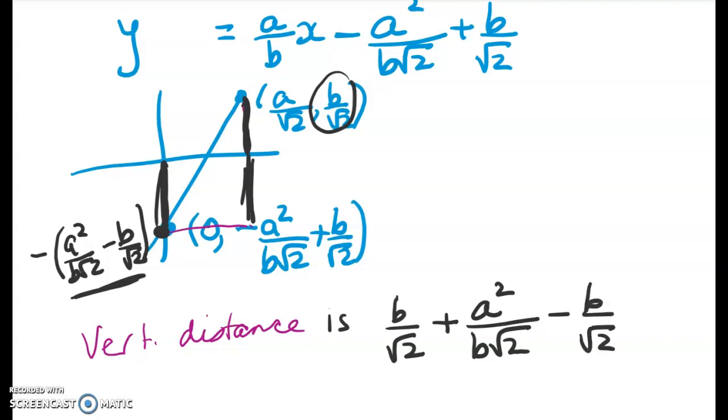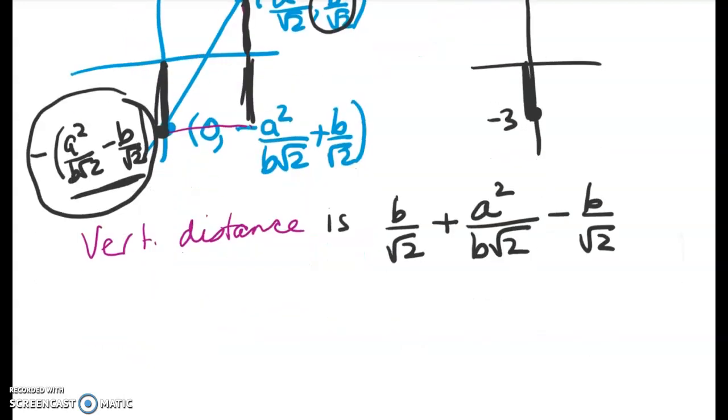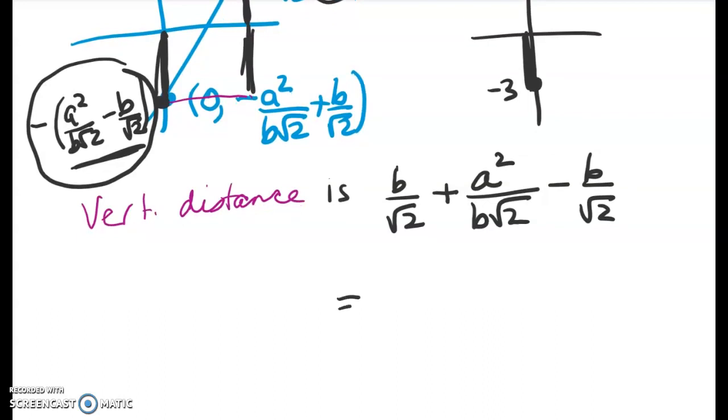Now, if you're confused by that very last bit, let's just think of a really simple example from year 12. If I've got the y intersect here at negative 3, then the distance, vertical distance here, is not negative 3, but it's 3. And that's all that I'm doing with this bit here. So we're there, right? The vertical distance simplifies to give me the result that we wanted, which is a squared on b root 2.